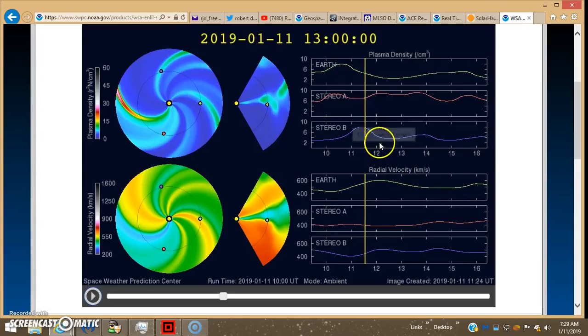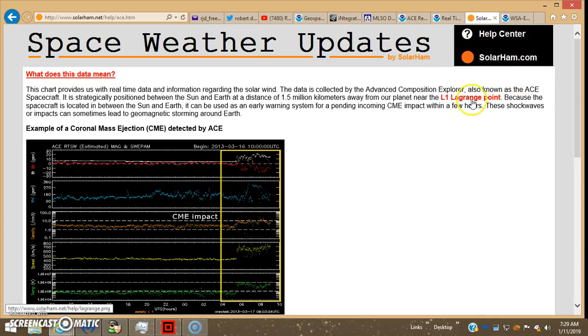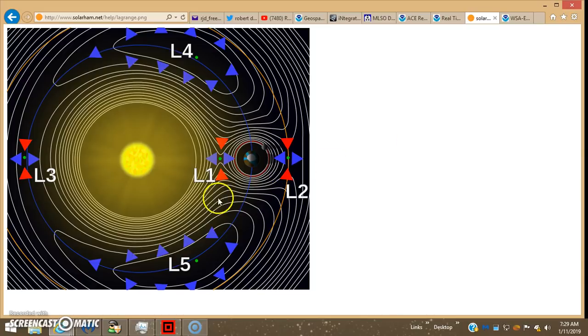If you look at Enlil, they pretty much predicted that. So there's the radial velocity on Earth, which would be measured by the ACE satellite and Discover satellites out here at L1 Lagrange point. So that checks.